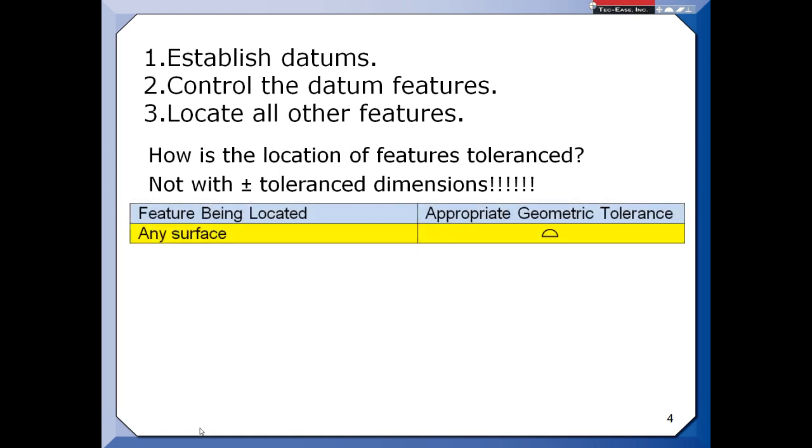Every feature on a part has a surface or surfaces. And there's only one geometric tolerance that can, in one clear way, locate surfaces. And that's profile of a surface. Now, the profile can be a general tolerance, or it can be right up on the field of the drawing.